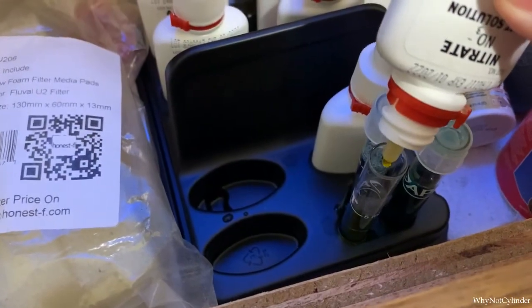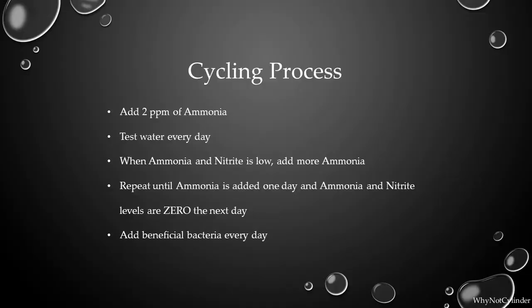Depending on the products that you choose, your process might be a little bit different. So for mine specifically, the instructions tell me to add two parts per million of ammonia and measure the water levels every day until your ammonia and nitrite levels drop. And then add in more ammonia. So this process continues until one day you add ammonia and the next day you measure zero for your ammonia and nitrite. This is how you know you have grown enough beneficial bacteria in your tank. And at that point your tank is cycled. And also during this process, every day I am adding in beneficial bacteria to help the culture grow.